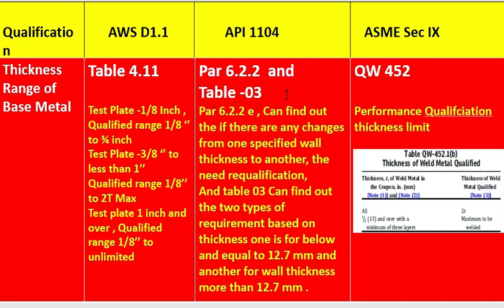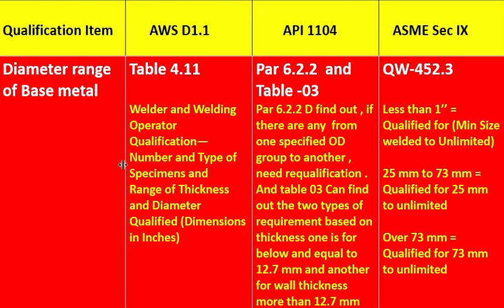In ASME Section 9 QW-452, performance qualification thickness limits: thickness of weld metal qualified is 2T; if 13 mm and over with a minimum of three layers, then maximum to be welded applies. The fourth qualification item is diameter range of base metal. In AWS D1.1 table 4.11, thickness range and diameter qualification are both covered. In API 1104 para 6.2.2 and table 3, the same structure applies.